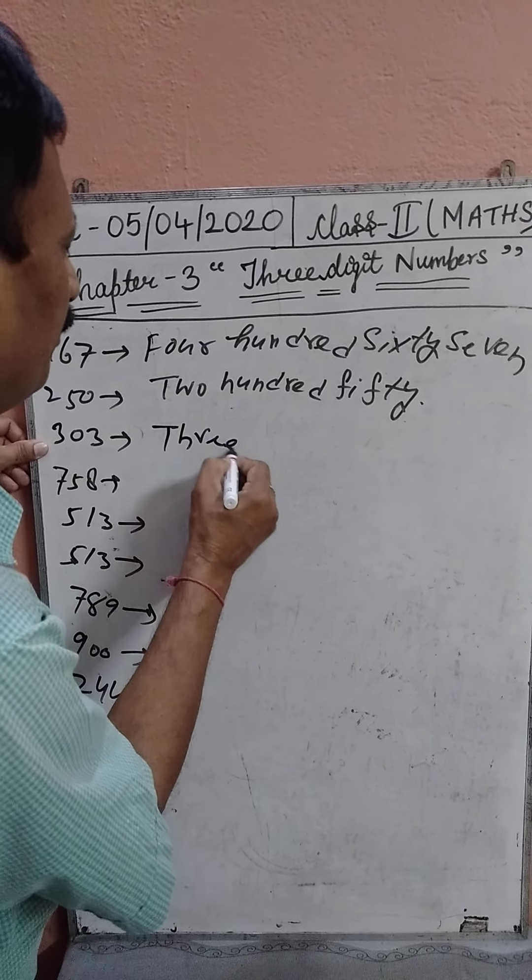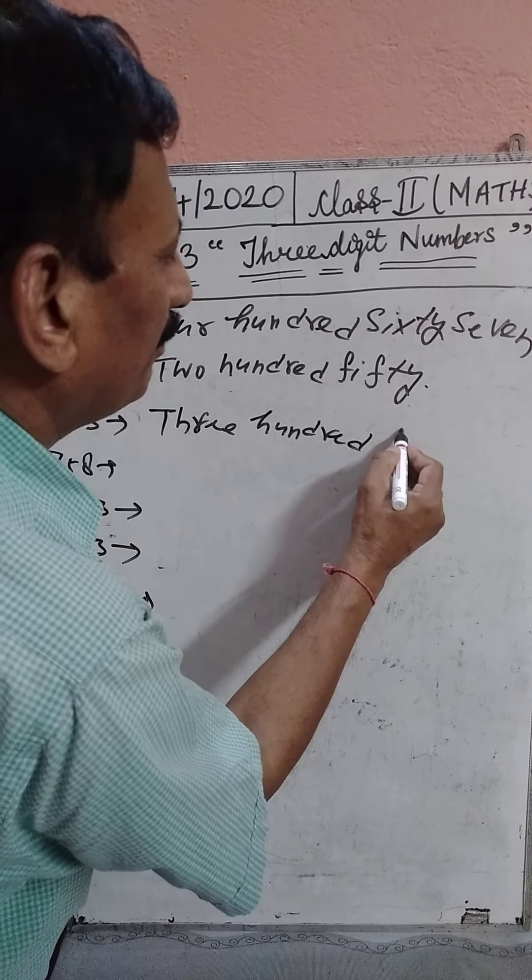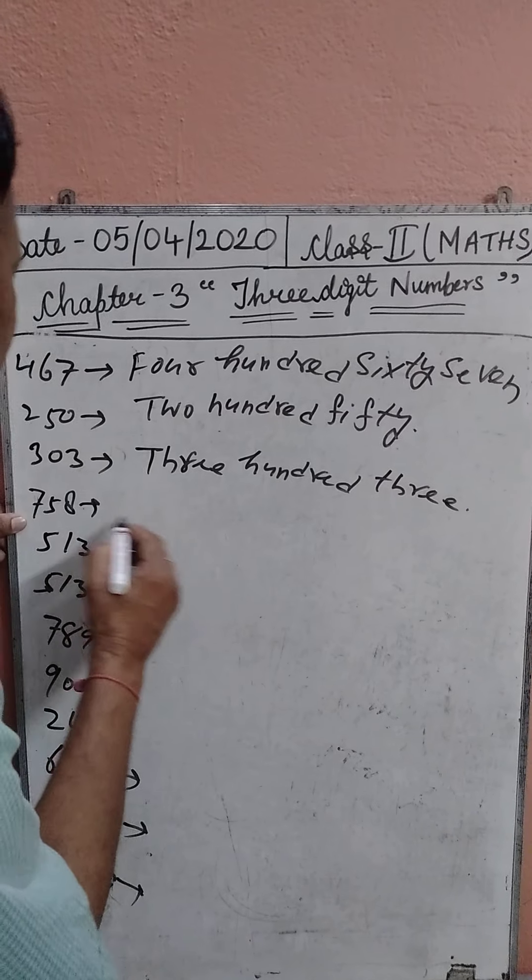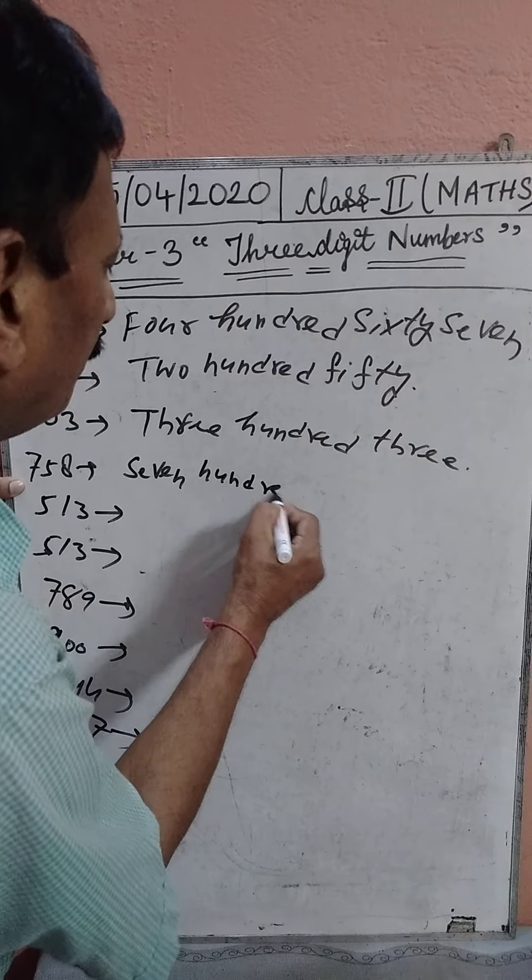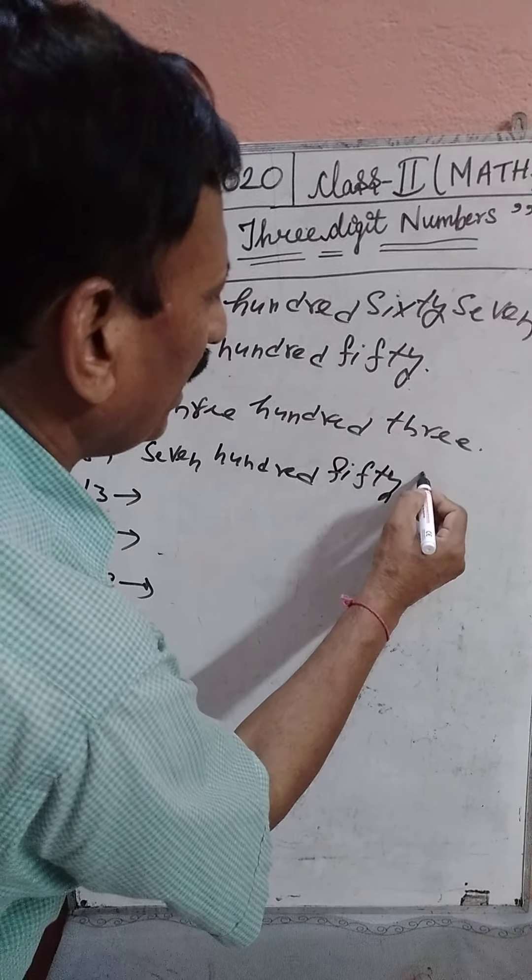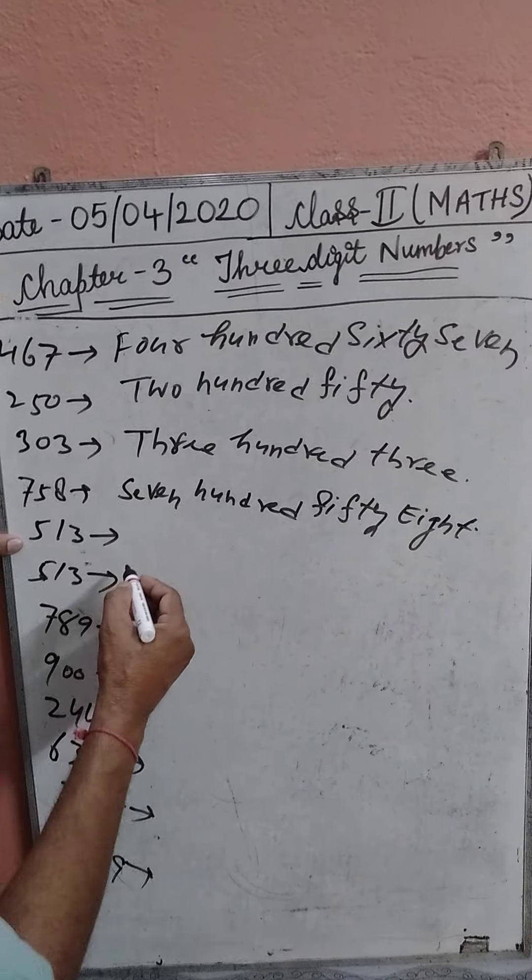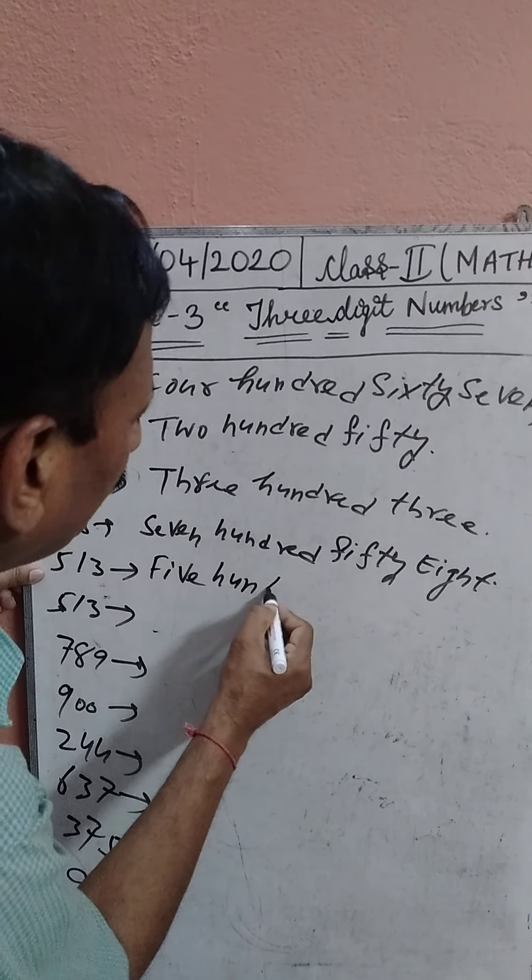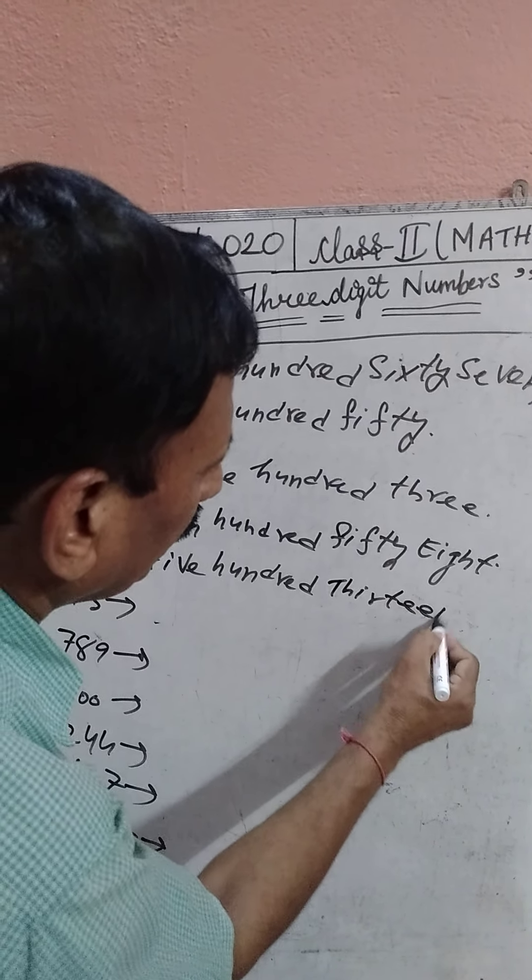300: three hundred. Next, 700: seven hundred. 158. Next, 513: five hundred thirteen.